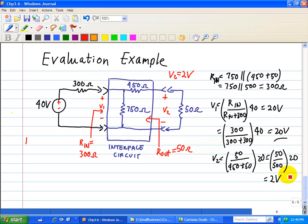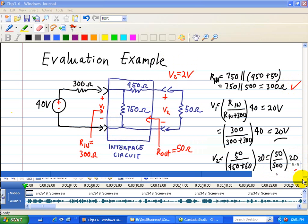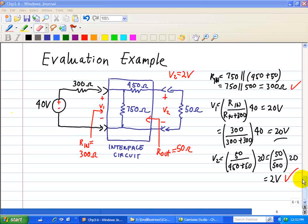So what we did is we verified the output constraint of 2 volts and an input resistance of 300 ohms. Next, we need to compare the output resistances. First of all, we turn off the 40 volt source and replace it by a short.